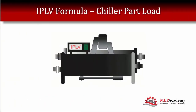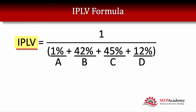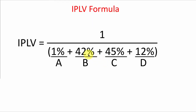The IPLV formula is 1 over the sum of four points: A, B, C, and D. These represent the efficiency of the chiller at different loads. Condition A accounts for 1% of operating time, condition B for 42%, condition C for 45%, and condition D for 12%.